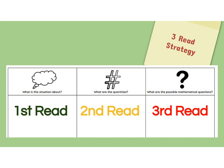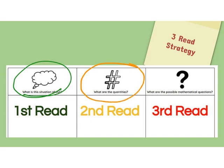We're going to use a three-read strategy to help us write an equation for our word problems. The three-read strategy is where we read the problem three times in different ways to get information. On the first read, we think about what the situation is about. On the second read, we look at the quantities, or how many of each thing we have in the problem. On the third read, we think about possible mathematical questions that could be asked about the problem.